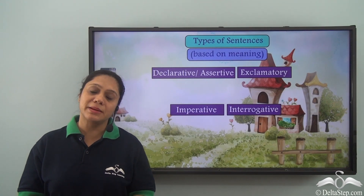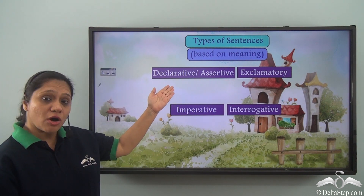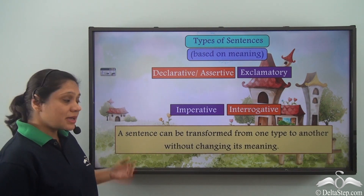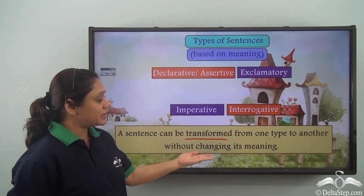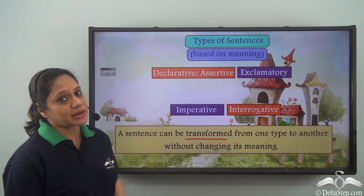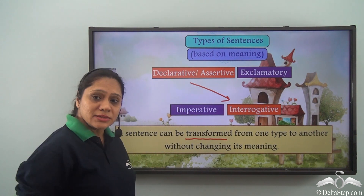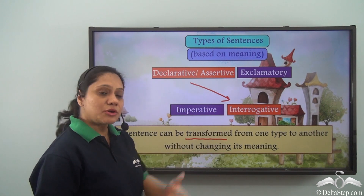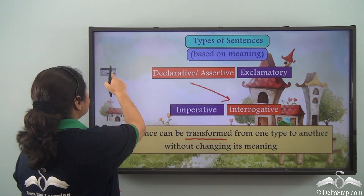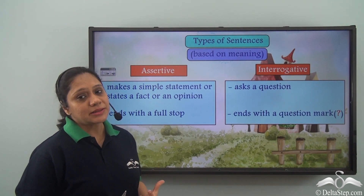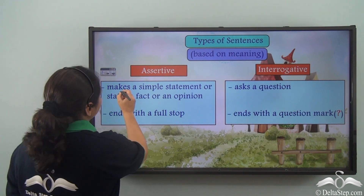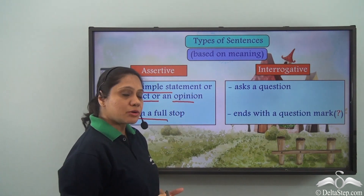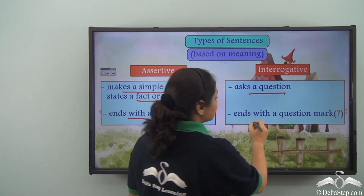Based on meaning, sentences can be of various kinds: declarative or assertive, exclamatory, imperative, or interrogative. A sentence can be transformed from one type to another without changing its meaning. Today we are going to learn how to transform a declarative or assertive sentence to an interrogative sentence and vice versa. An assertive sentence makes a simple statement or states a fact or opinion and ends with a full stop, whereas an interrogative sentence asks a question and ends with a question mark.